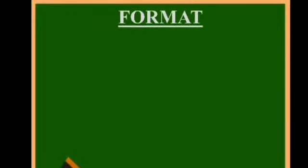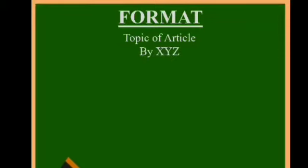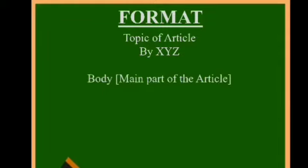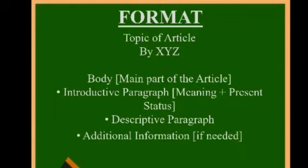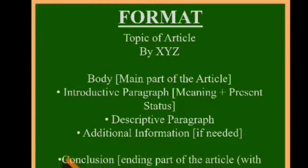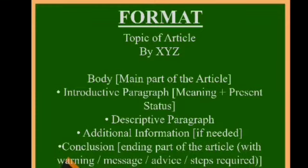Let's see the format of an article. Ingredients of article writing: First, the heading is the topic of the article. Next, by XYZ — here we write the writer's name. Then the body of the article, which is the main part and includes an introductive paragraph covering meaning and present status, a descriptive paragraph with additional information if required. Then the conclusion: the ending part of the article with a warning, message, advice, or steps required.